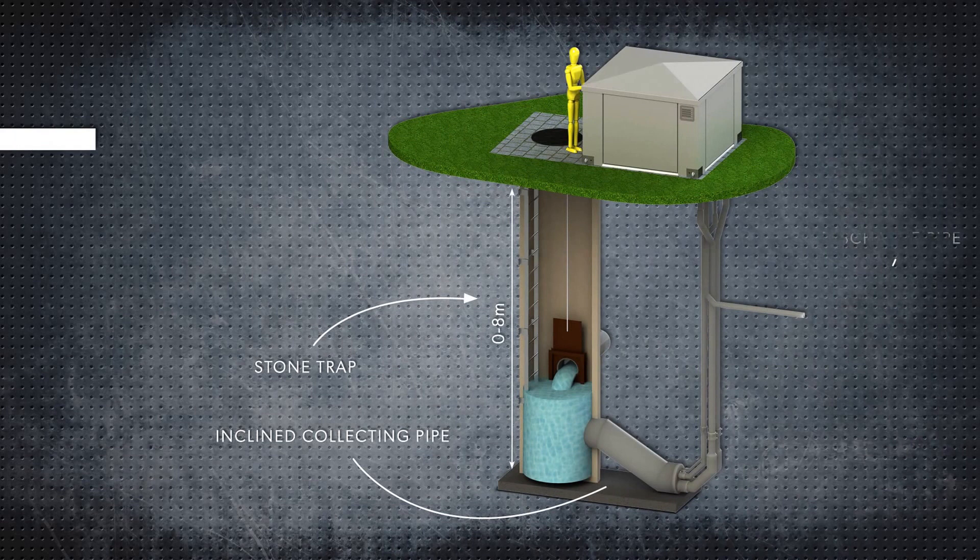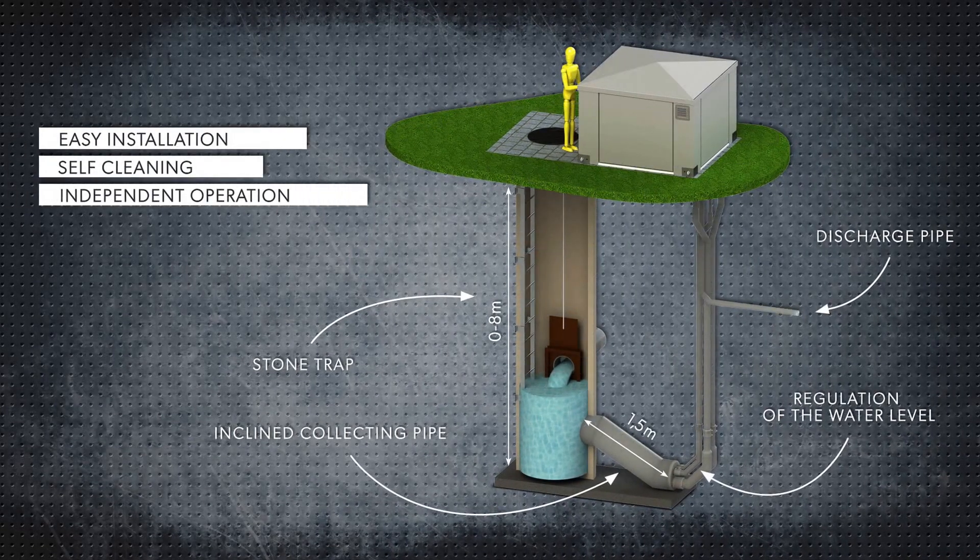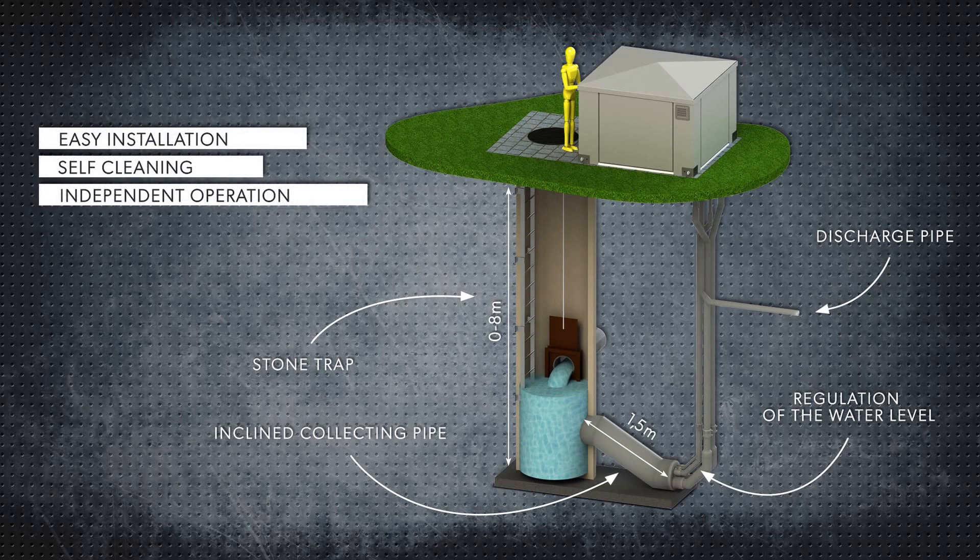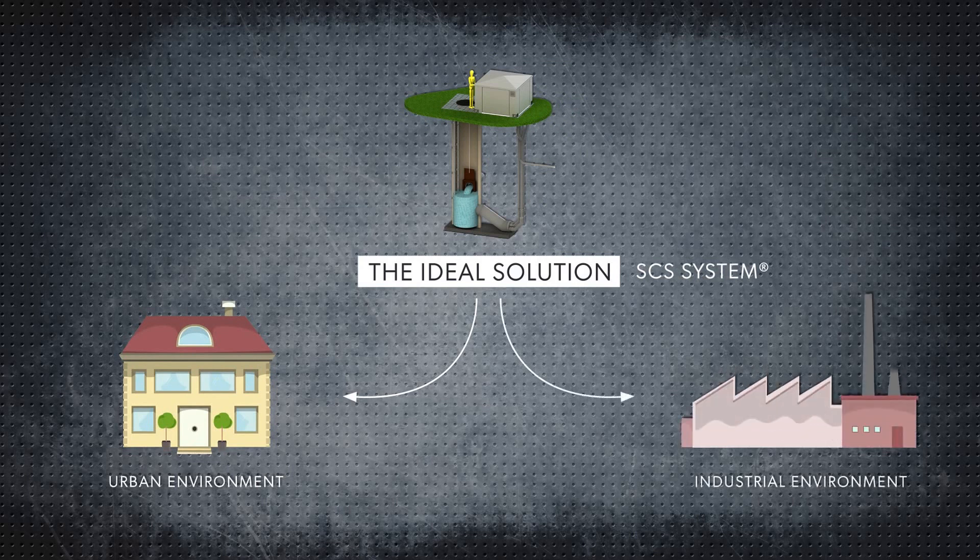The inclined collecting pipe is simple to install, even on older generation systems, and is easily retrofitted to existing facilities. The ideal solution for wastewater treatment in both urban and industrial environments.